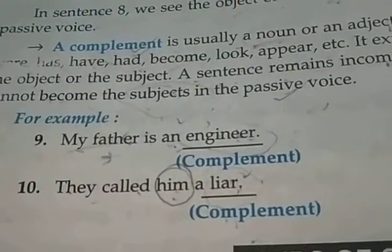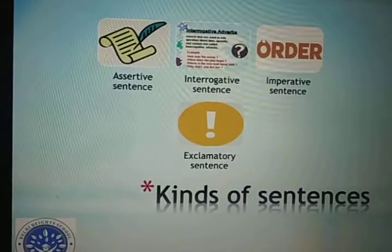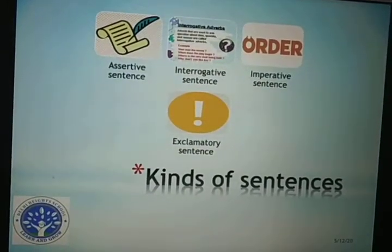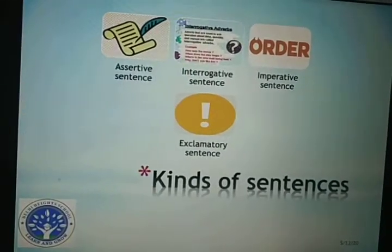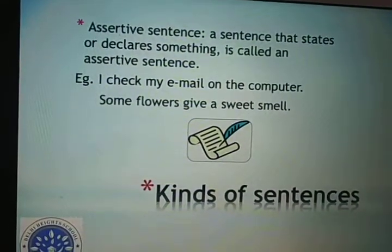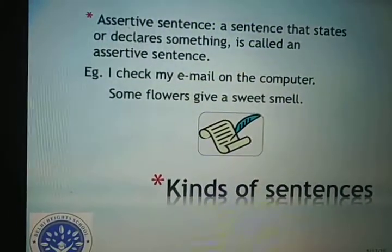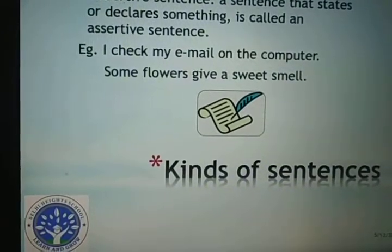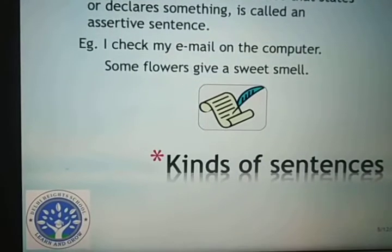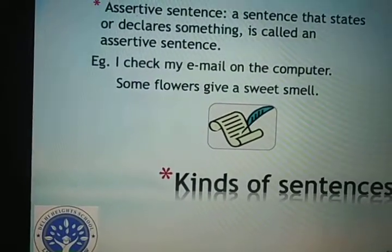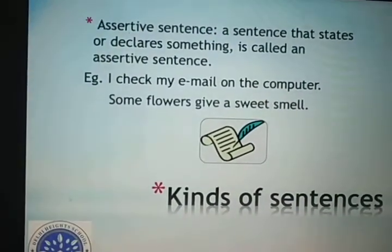Now we will discuss kinds of sentences. There are basically four kinds of sentences. First is assertive sentences. Second is interrogative. Third is imperative. And fourth is exclamatory sentences. Assertive sentences are those which state or declare something. For example, 'Some flowers give a sweet smell,' 'I check my email on the computer,' 'Tomorrow is a holiday' — something is being declared, so it becomes an assertive sentence.